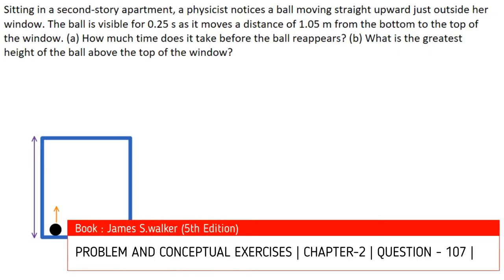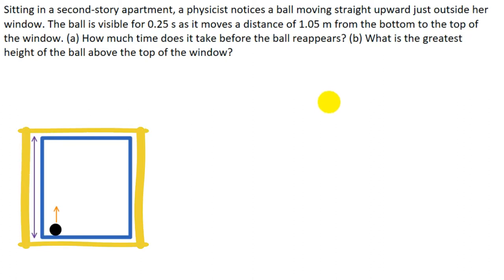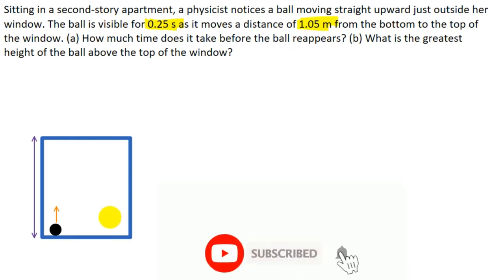In this question we are given that a physicist noticed that a bowl is moving straight upward just outside her window, and the bowl is visible for 0.25 seconds as it moves from the bottom to the top of the window. The length of the window is given to be 1.05 meters.